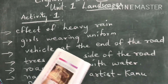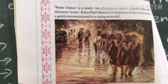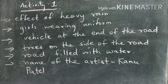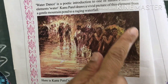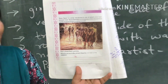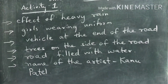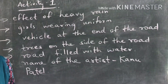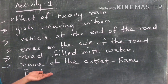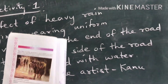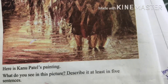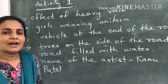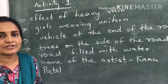You can also see a vehicle at the end of the road. It is not clear which vehicle it is, but it is a vehicle. On the side of the road you can see a trunk of a tree, and it is all dark, suggesting a line of trees. When you look at the road you can easily find that it is filled with water. The name of the artist, Kanu Patel, is mentioned on the right side corner of the painting. Activity 1 mainly deals with describing the picture in your own words, and I hope with these points you can write at least 5 sentences.